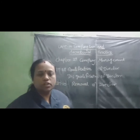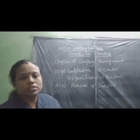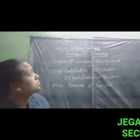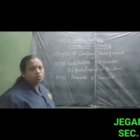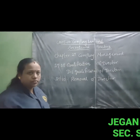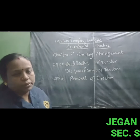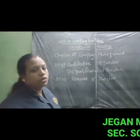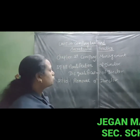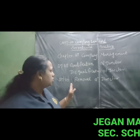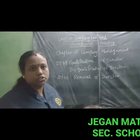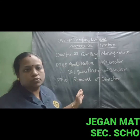Good morning students, welcome to you all. Pro-standard commerce. In this video we are going to discuss Unit 10, Company Law and Secretarial Practice, Chapter 27, Company Management. Topic: qualification of director, disqualification of director, and how to remove directors. So these 3 topics today we are going to discuss.